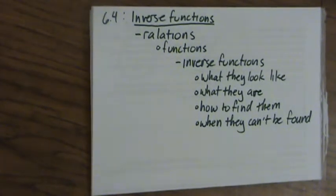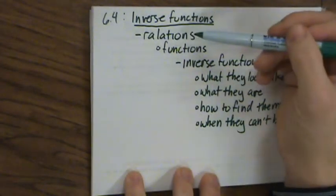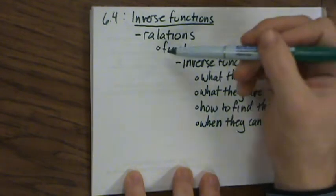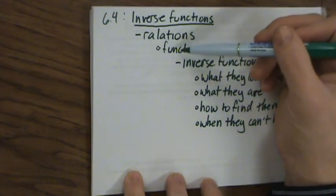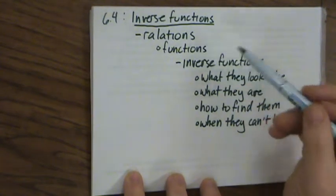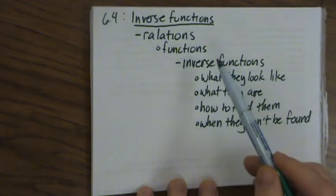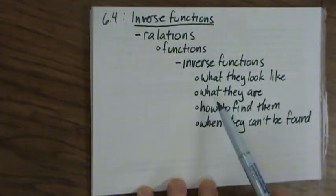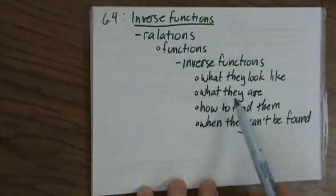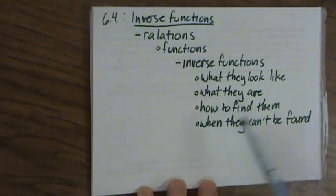Good early morning. In 6.4 we're going to be talking about inverse functions. To start, we'll talk about relations first, and then a special kind of relation — a function. We'll discuss what makes a relation a function, what inverse functions look like (particularly their graphs), what an inverse function means exactly, how to find one, and when a function doesn't have an inverse.